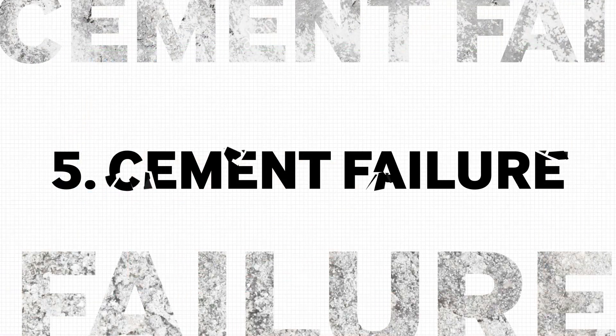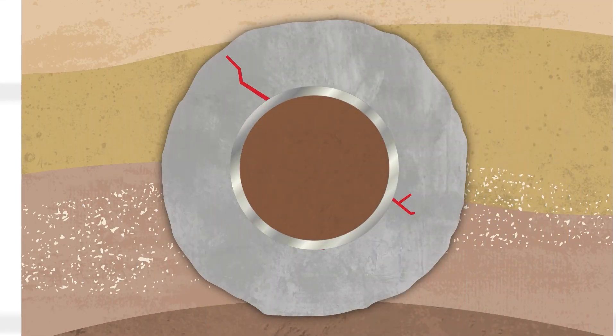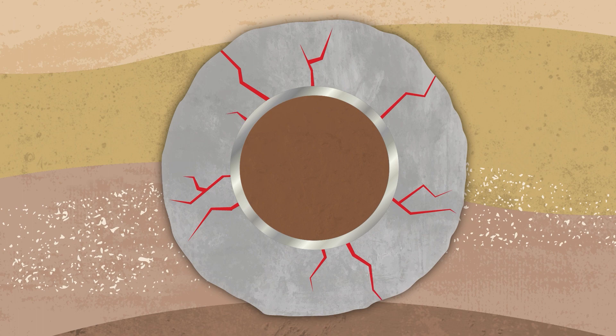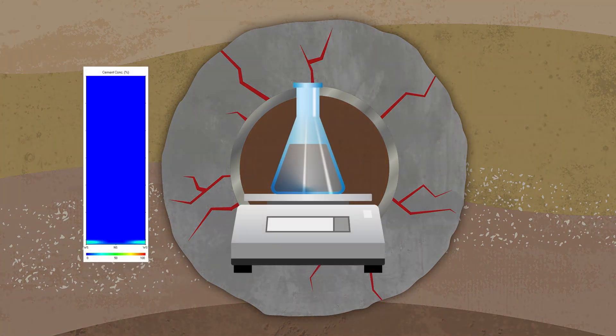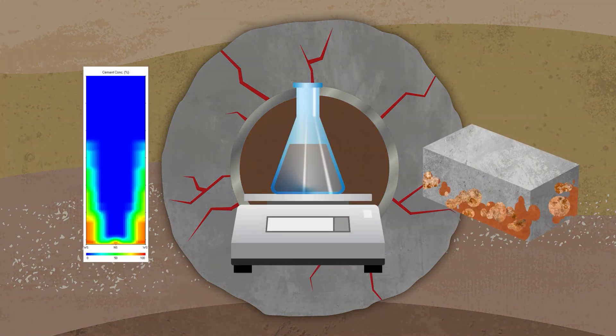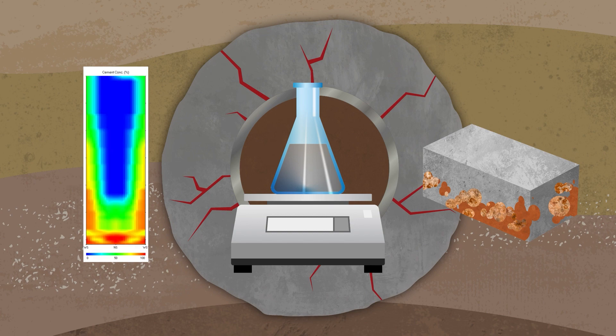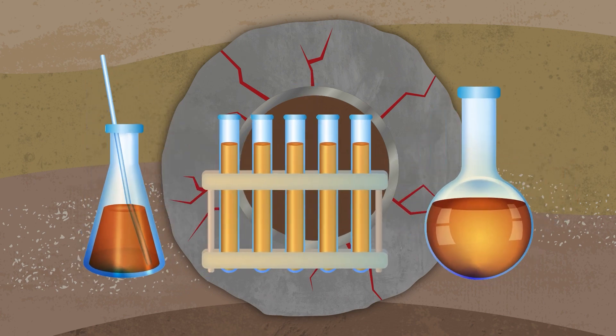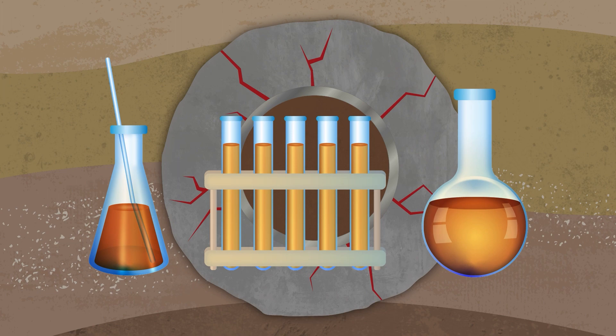Cement failure will occur if the stresses placed on the cement exceed its strength. Contamination, poor density control, and corrosive fluids in the annulus can compromise the cement strength. Cement failure can be prevented with a slurry design that considers the various loads the cement will experience over its full life cycle.